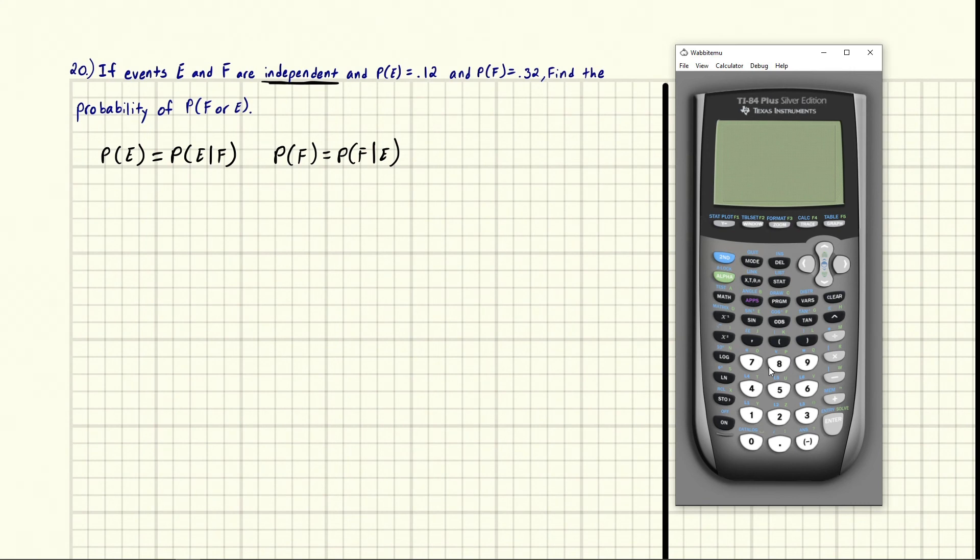Our second big piece of information is that we're asked to find the probability of or. Since they don't tell us if the events are mutually exclusive or not mutually exclusive, we have to take the not mutually exclusive case because it's the most broad case. It catches everything.